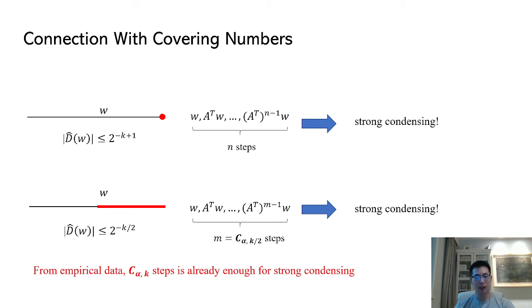Unfortunately, in our proof we lose a factor of 2 in k. In fact, we also show that roughly Calvary number alpha k over 2 steps is already enough for very strong condensing by empirical data in the paper. So we believe the factor of 2 loss is an artifact of the proof.